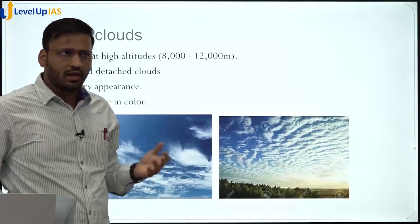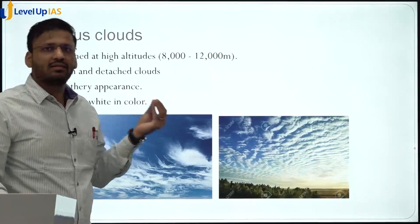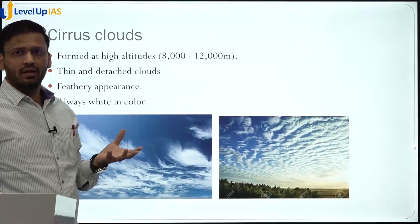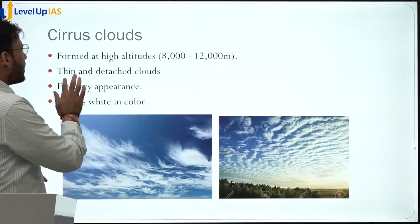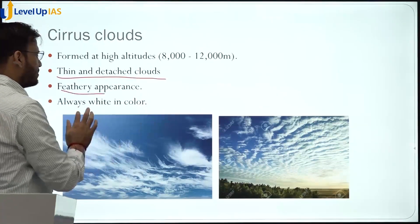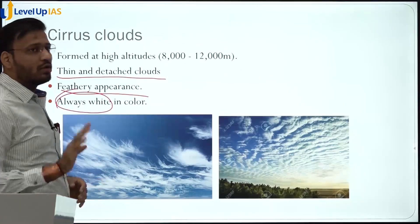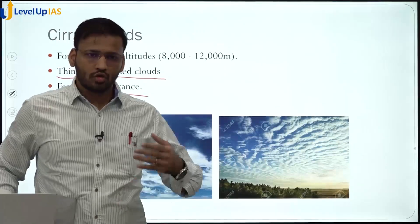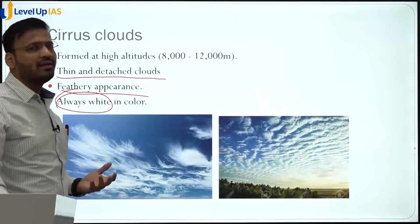Cirrus clouds lack a sufficient amount of moisture, which is why they cannot give rainfall. They are thin and detached, feathery in appearance, and always white in color. You won't see them in black. Once clouds become black, the probability of rainfall increases — but cirrus clouds remain almost white in color.